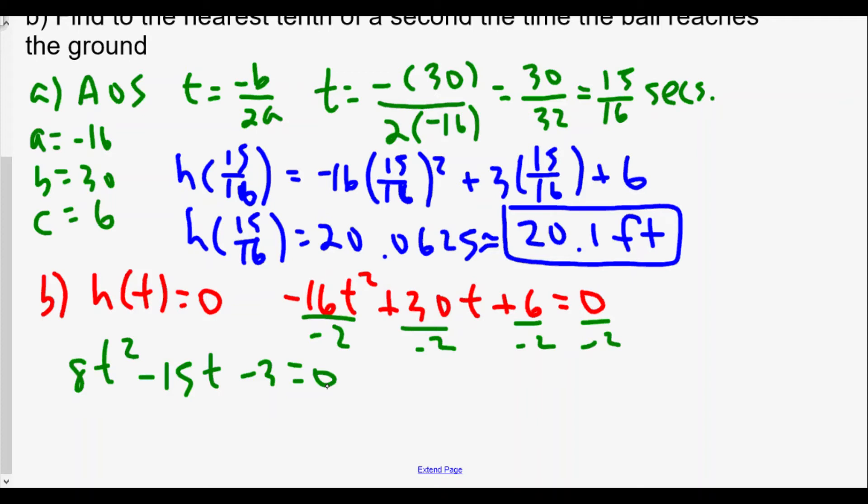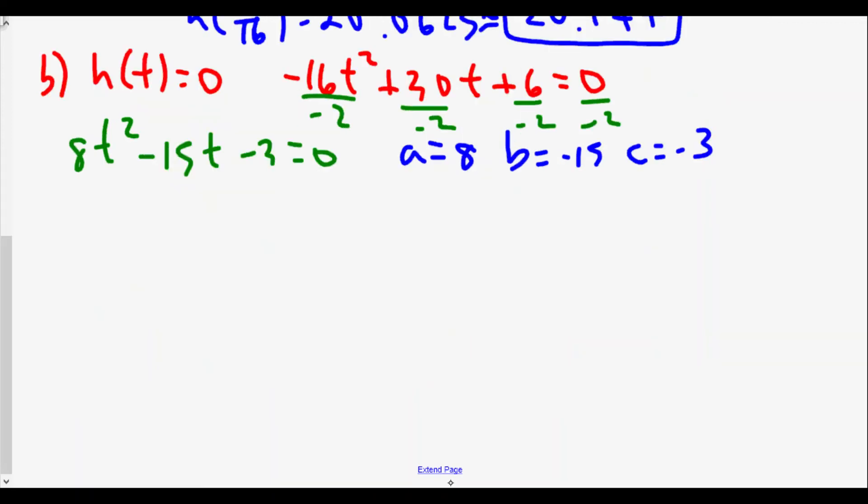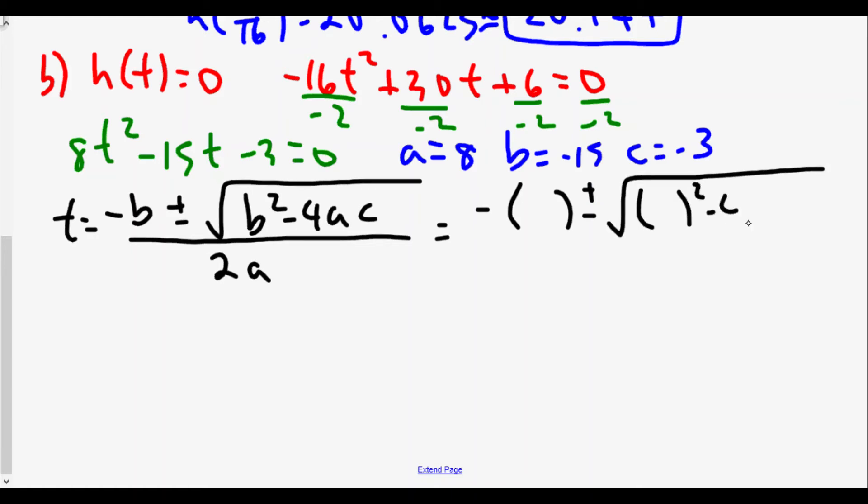We get 8t² - 15t - 3 = 0. I think in this case two numbers multiply to 24 and subtract to 15, I don't think we can do that, so we're going to use our quadratic formula. After simplifying, a = 8, b = -15, and c = -3. I'll use the smaller numbers, but if you use the original numbers of -16 for a, 30 for b, and 6 for c, that's totally okay. Our quadratic formula: t = [-b ± √(b² - 4ac)]/(2a).